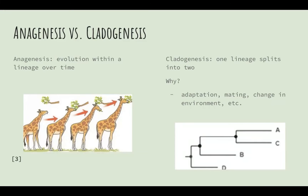For example, there is fossil evidence of giraffes with short necks. Now giraffes have long necks to eat leaves off of trees, or some people argue that they have stretched their necks over generations, but that's besides the point. Giraffes evolving to have long necks is an example of anagenesis.